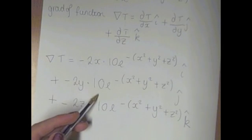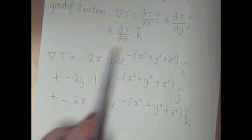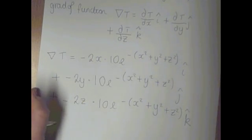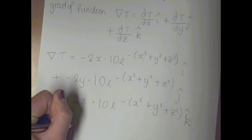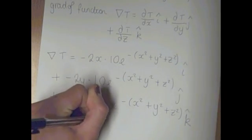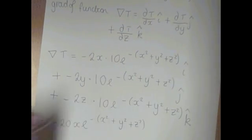So then to simplify this, we can take out, we can multiply these two bits together to make minus 20x e to the minus (x squared plus y squared plus z squared) i.